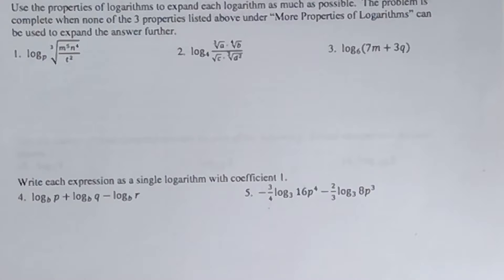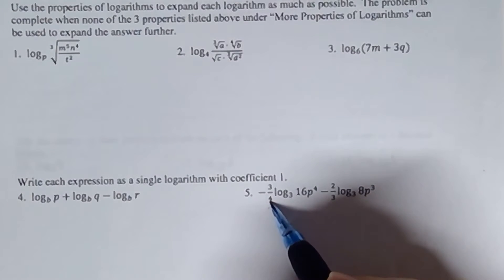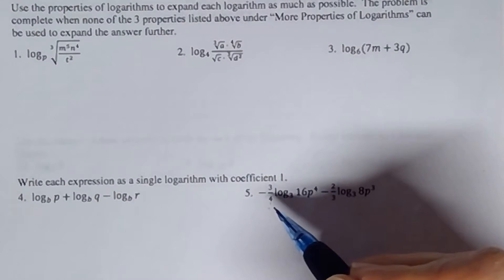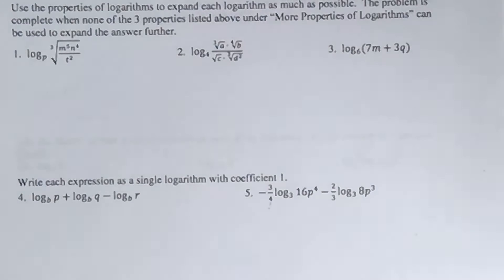We are not multiplying negative three-fourths times 16p to the fourth, so you can't just move the negative three-fourths in or the 16 out. My overall point: when you do logarithms, please follow the logarithm rules we are learning here in chapter four. Do not follow any rules from any other time in this class or any other class that's not related to logarithms. Follow just the logarithm rules.